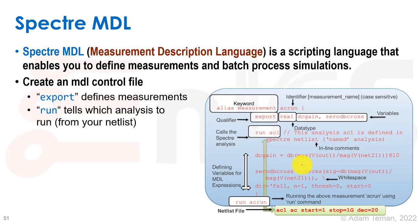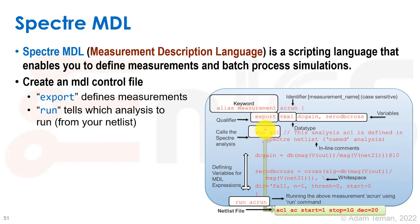Here's an example of how such an MDL analysis is run. You write the keyword 'measurement', give it a name and identifier — 'acrun' in this case — and you have qualifiers inside which define the measurement. You write 'export', the type as real, and then the names 'dcgain' and '0dbcross'. These define two measurements we want to capture. It's then going to call a Spectre analysis called AC1, which is an AC analysis defined inside our netlist file.